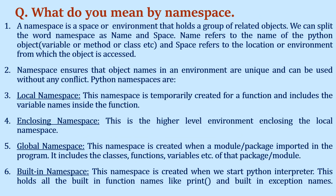What is a namespace? A namespace is a space or environment that holds a group of related objects. Think of it as a combination of 'name' — referring to Python objects, named variables, methods, or classes — and 'space' — referring to the location from which the object is accessed. Namespace is a concept that ensures object names in an environment are unique and can be used without any conflict. Python namespaces include local namespace, enclosing namespace, global namespace, and built-in namespace.